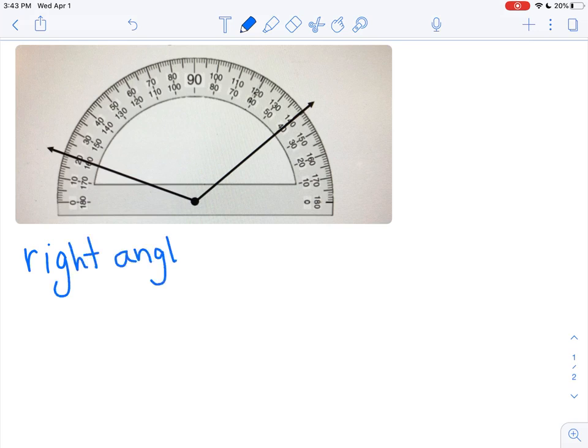You know that a right angle is how many degrees? That's right. A right angle is 90 degrees.